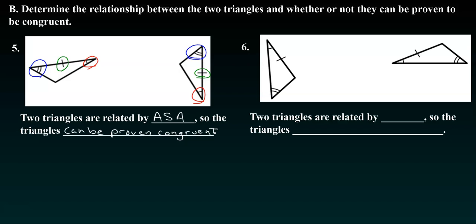Again, let's go ahead and try number six on your own and then check and see how you did. So hopefully you found that the two triangles are related by AAS, so the triangles can be proven congruent.